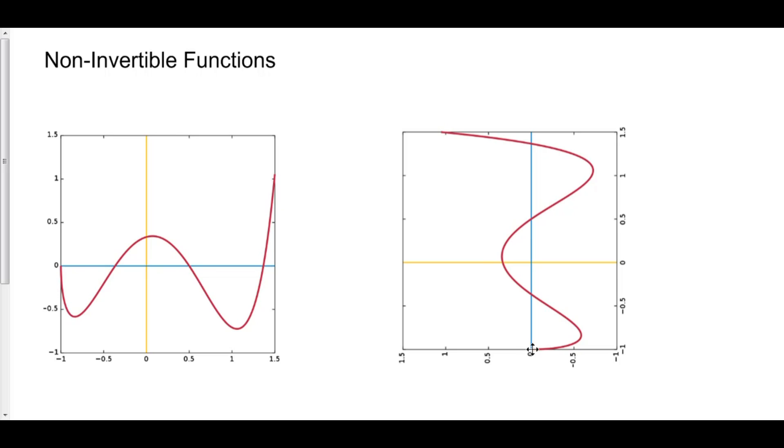Well, now we can plug in zero and see what y values give us zero. Here, it looks like about negative one, about negative 0.5, zero, 0.5, and about 1.4.